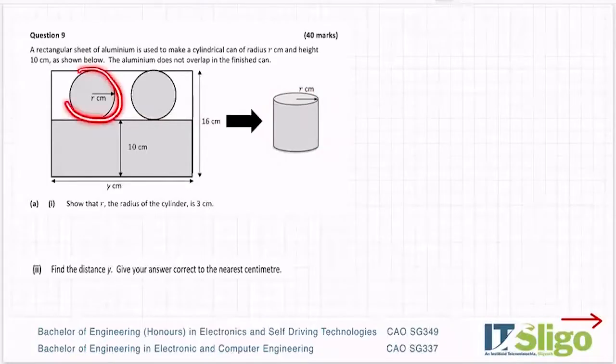Its height becomes this dimension here and in fact the circumference of the circle of the cylinder at the top becomes this length here. So this is a can, so it's got a lid at the top and a lid at the bottom. Cylinders can be open-ended in that they've got no top or bottom, or they could have just got a base and no top, or of course it could be closed like this one.